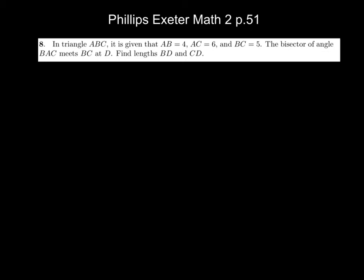This problem is number 8 on page 51. It's talking about angle bisectors, and I wanted to do a quick review or introduction to how an angle bisector can create proportional parts.